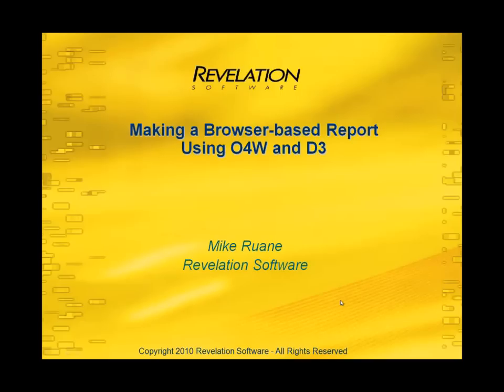Hi, this is Mike Ruane of Revelation Software, and today we're going to talk about making a browser-based report using OpenInsight's O4W and TigerLogix's D3 data source. It's a relatively simple process. We assume that you already have your O4W configured to run correctly on your machine. You simply choose to run a report, walk through creating it, save it, and then run it at your will.